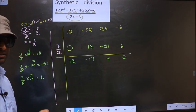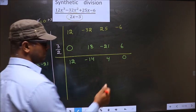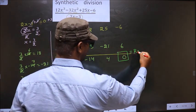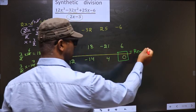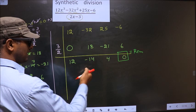Now once you have done till here, then the last number is your remainder. Always the last number will be your remainder.